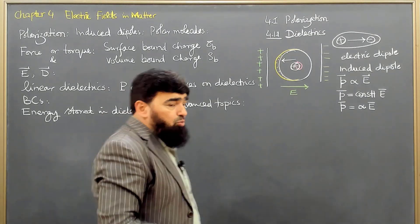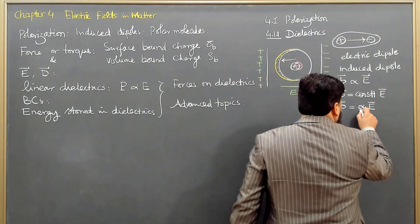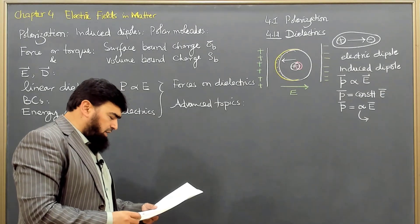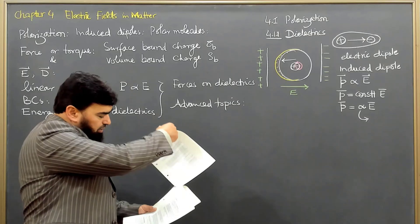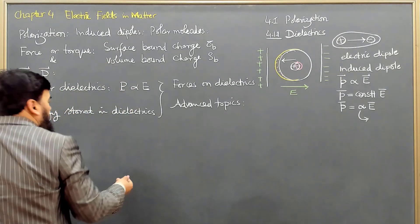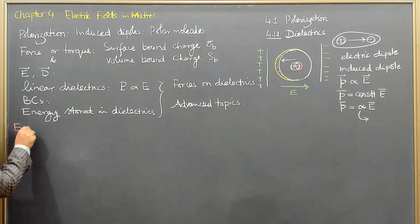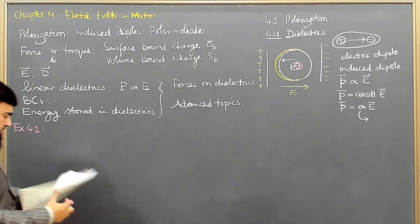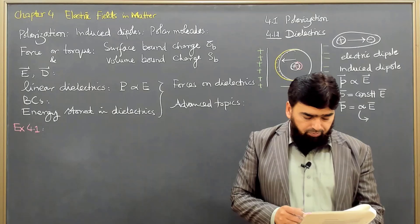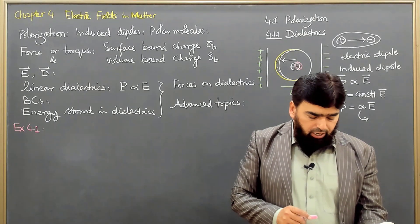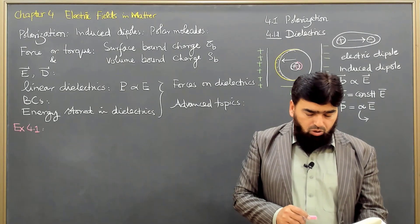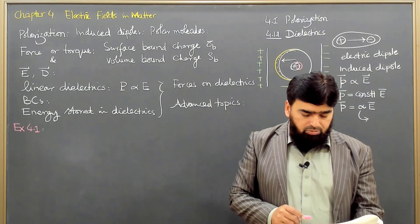In Example 4.1 we will derive what α can be, to get a rough idea. The example says: a primitive model for an atom consists of a point nucleus of charge +q surrounded by a uniformly charged spherical cloud of charge −q and radius a. Calculate the atomic polarizability of such an atom.